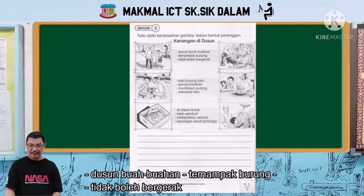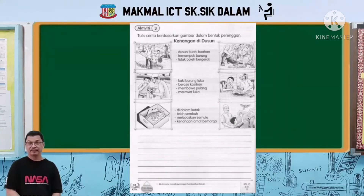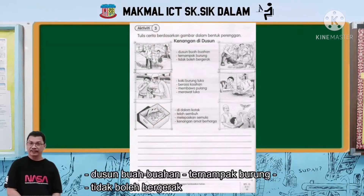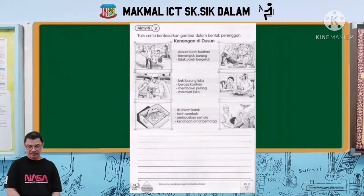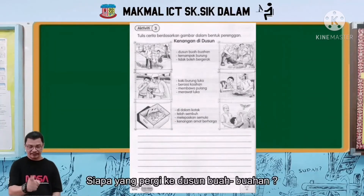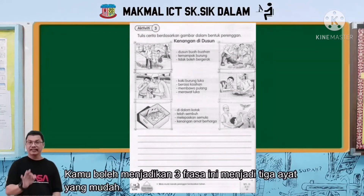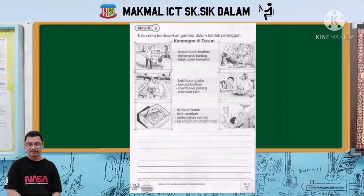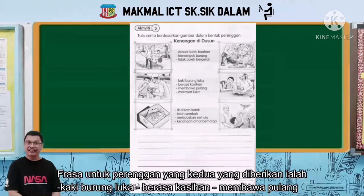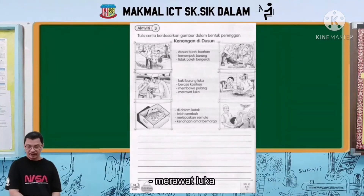Frasa yang diberikan untuk perenggan pertama ialah: dusun buah-buahan, ternampak burung, tidak boleh bergerak. Siapa yang pergi ke dusun buah-buahan? Kamu boleh sambung-sambungkan ayat itu dan menjadikan frasa-frasa ini tiga ayat yang mudah. Frasa untuk perenggan kedua yang diberikan ialah kaki burung luka, berasa kasihan, membawa pulang, merawat luka.